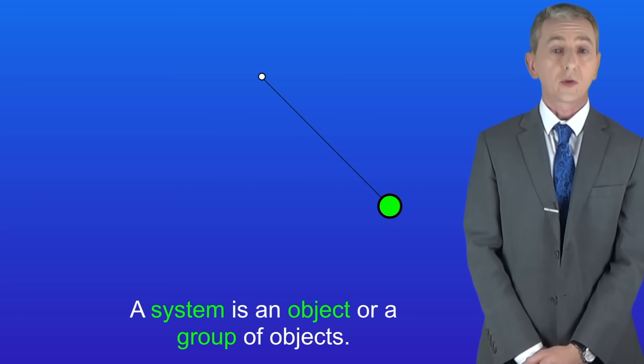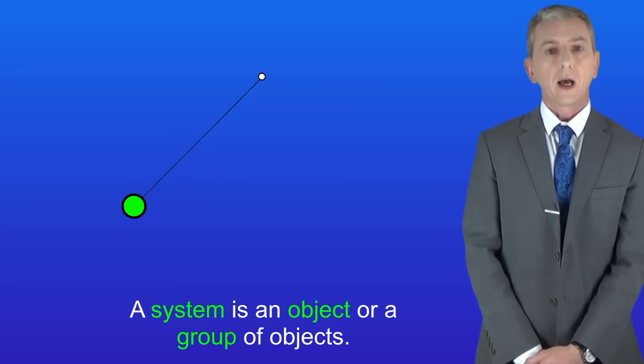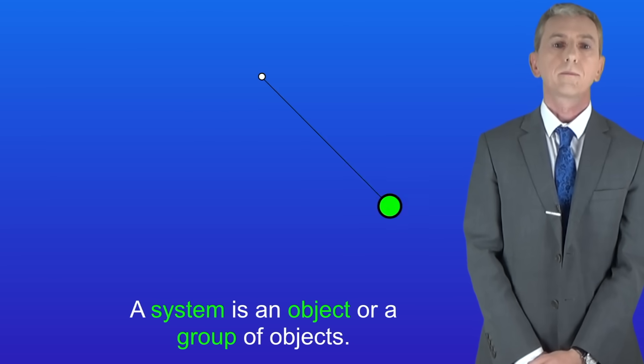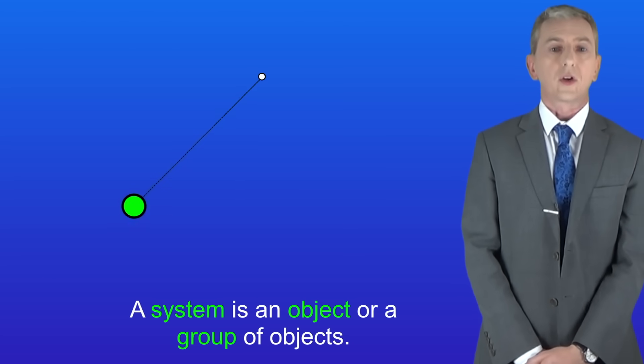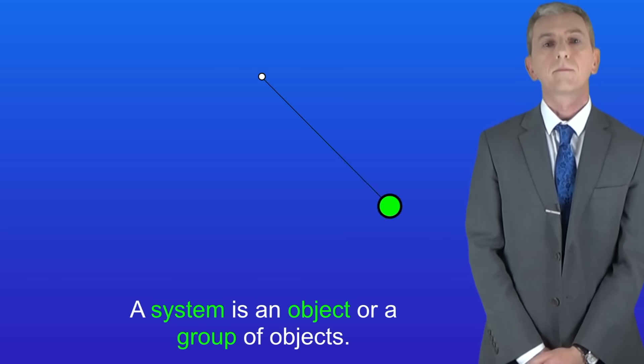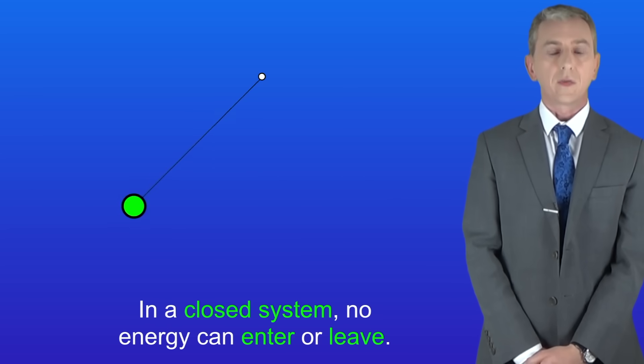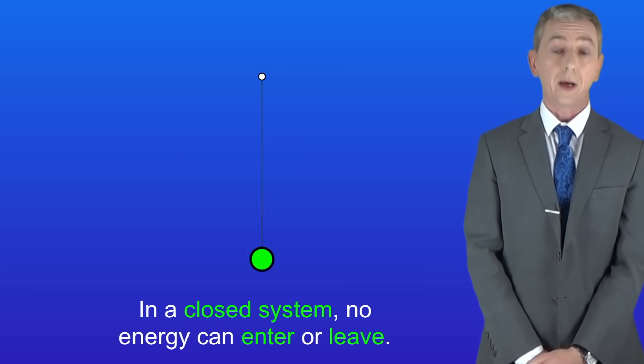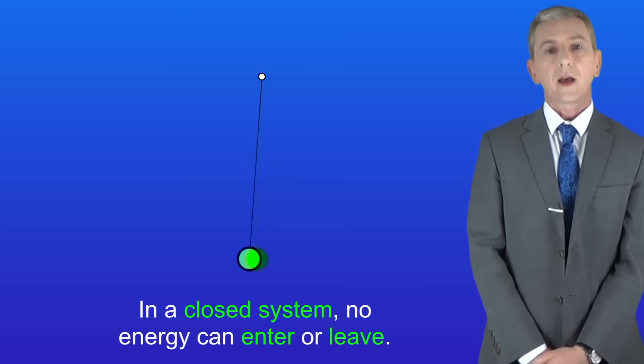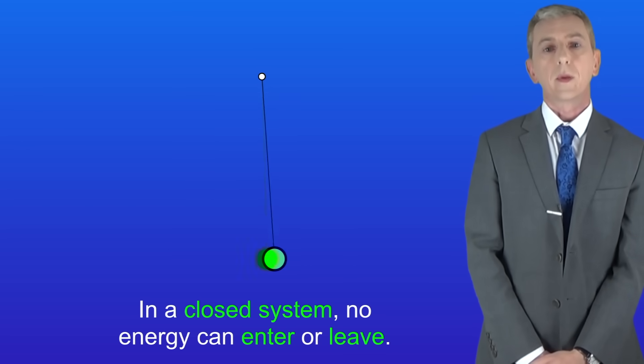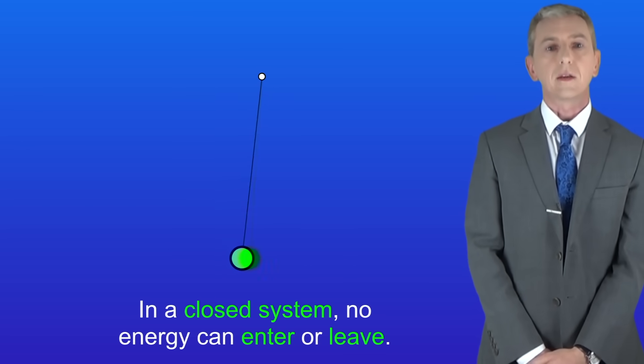So in this case the objects are the mass, the string and the fixed point at the top. There are also air particles and all of that is the system. Now I want you to imagine that no energy can pass into this system or out of this system. Scientists call that a closed system because no energy can enter or leave.